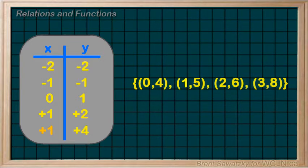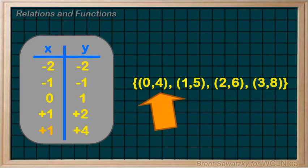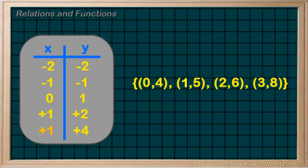Sometimes the relation is described in a set like this instead — just a different format. We know that the first number in each pair is the x-value, and the second number is the y-value. So we look at our list and ensure that for any of our x-values, there's only one y-value. This relation is a function, in that there are no duplicate x-values. Clearly a function.